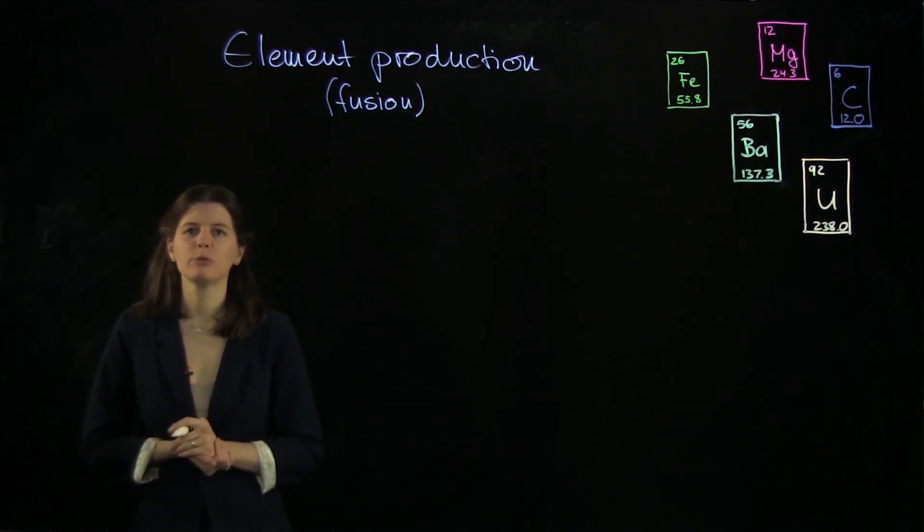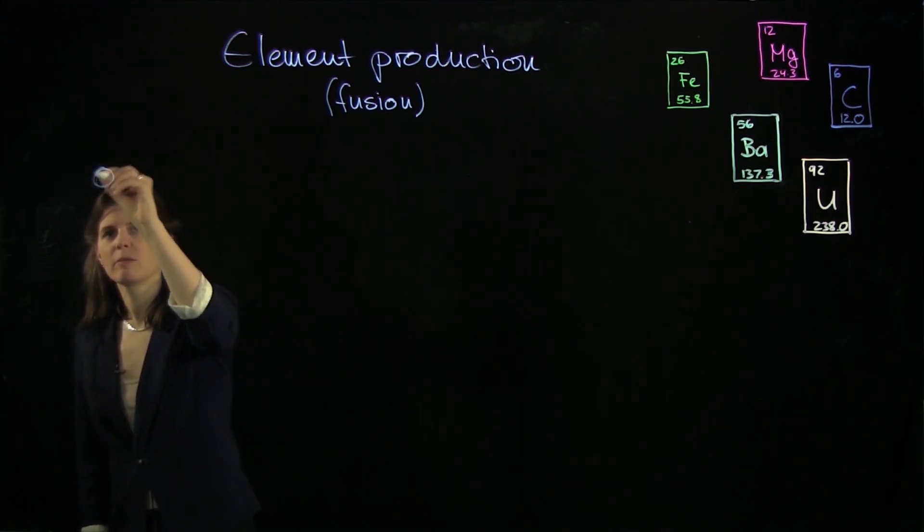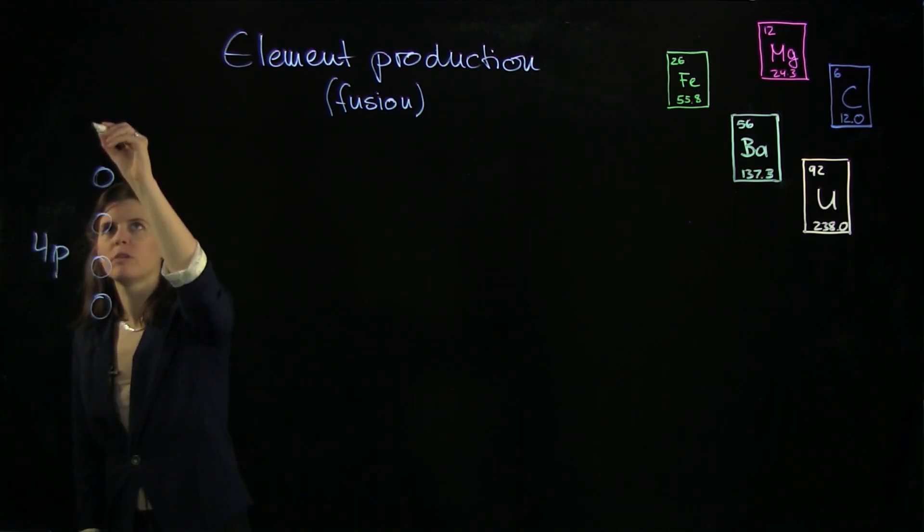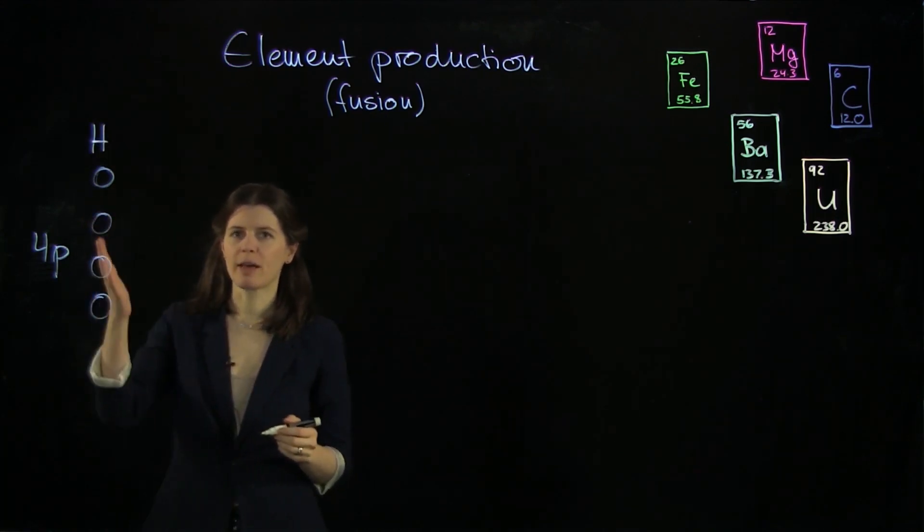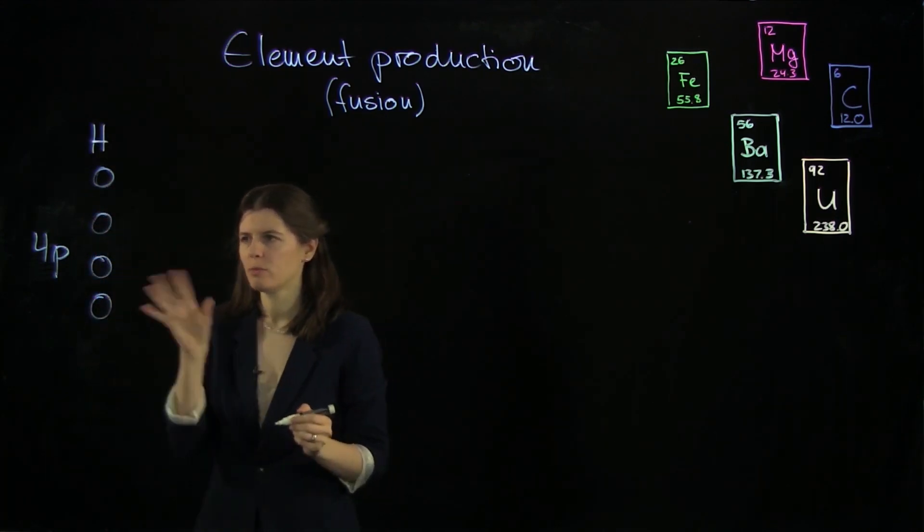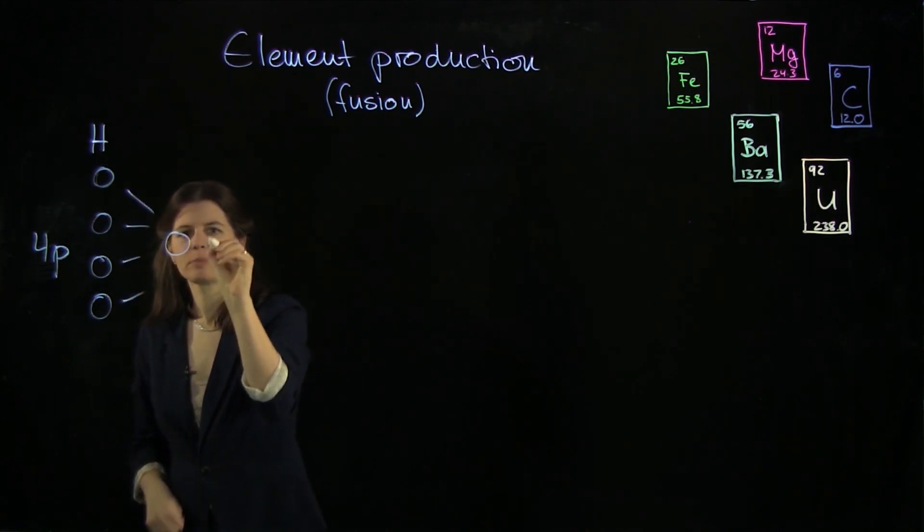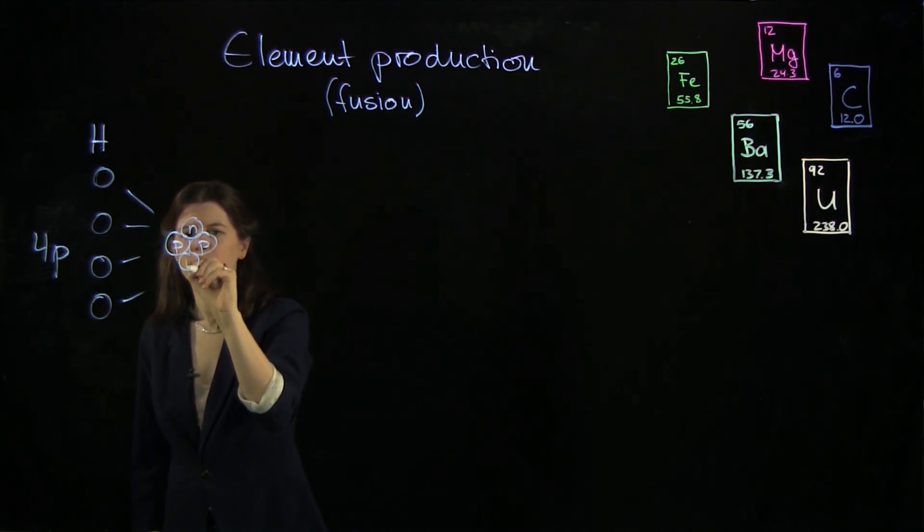So we want to reproduce what is going on in the sun. And what's basically happening is that four protons, which also are just four hydrogen atoms, come together in a series of steps that we're going to leave out for now. And they form a helium atom. And that's made from two protons and two neutrons.